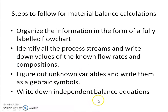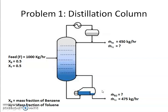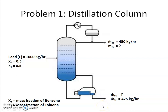Next, write down the independent balance equations. You can write a benzene balance, a toluene balance, or an overall material balance. However, note that if you add the benzene balance and the toluene balance, you get the overall balance — so they are not all independent. As a thumb rule: count the number of components; that is the number of independent material balance equations you can write. Here we have two components — benzene and toluene — so we can write two independent equations.